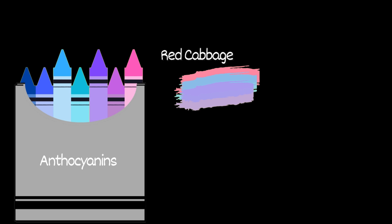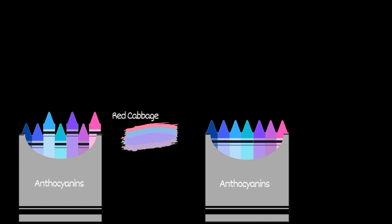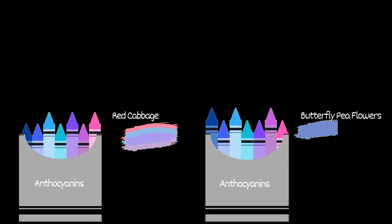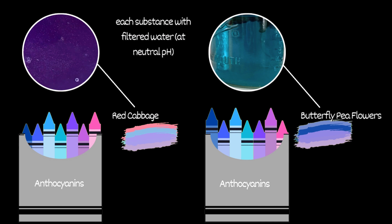This also helps explain why there are some differences between red cabbage and butterfly pea flowers. If you've used red cabbage before, you'll know that red cabbage is purple at a neutral pH, but butterfly pea flowers are blue. This is because they're made of slightly different anthocyanin molecules.